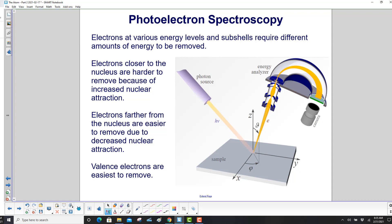Electrons at various energy levels and subshells require different amounts of energy to be removed. Electrons closer to the nucleus are harder to remove because of the increased nuclear attraction. Electrons farther from the nucleus are easier to remove due to the decreased nuclear attraction. And the valence electrons are the easiest to remove.